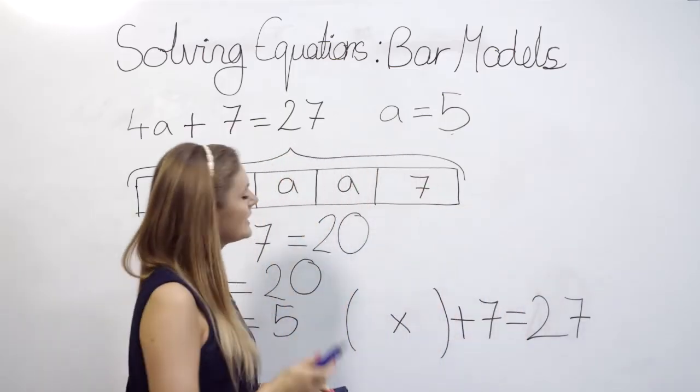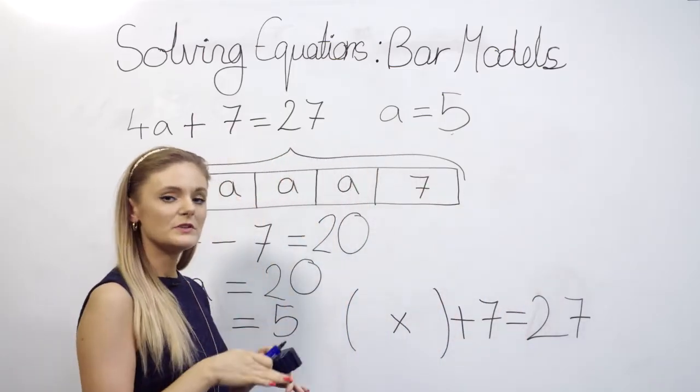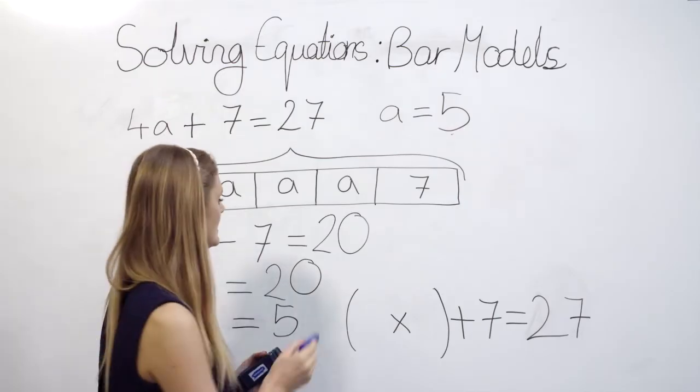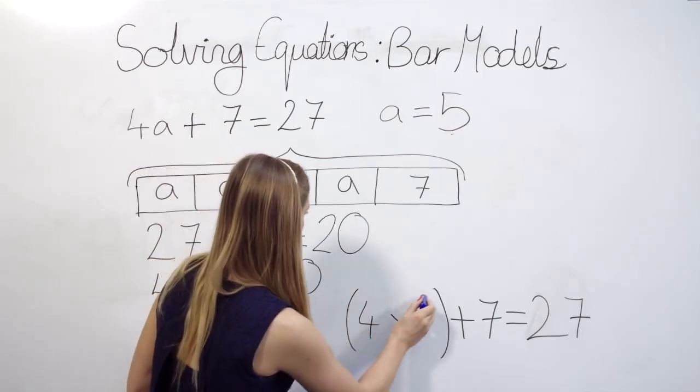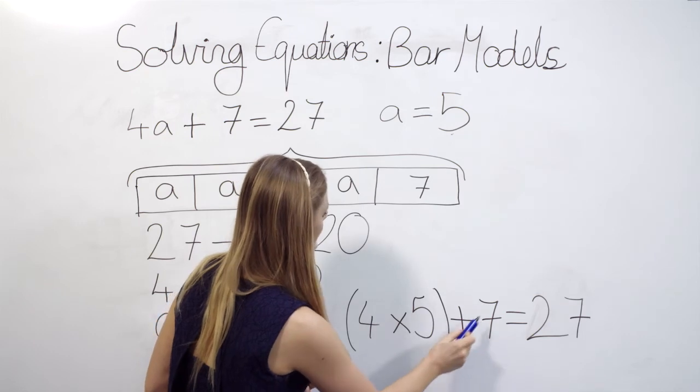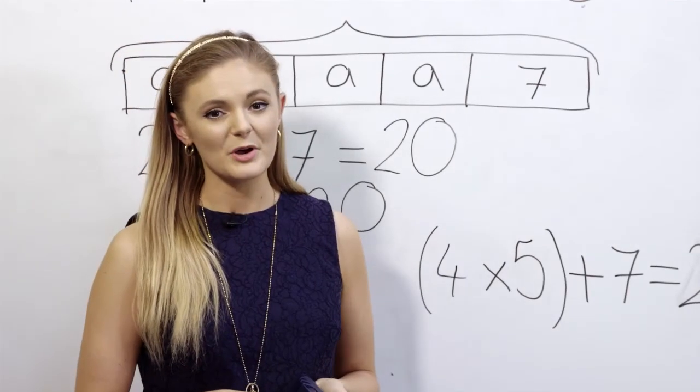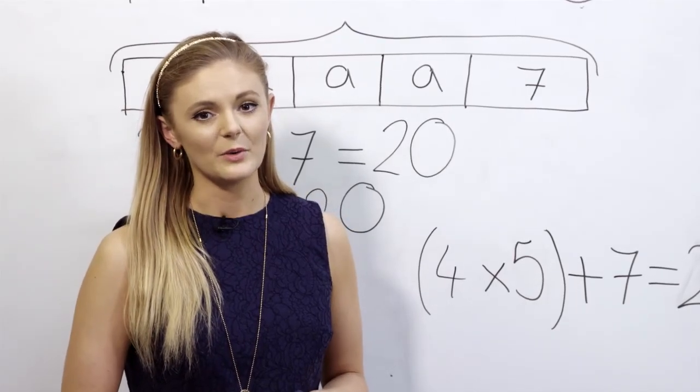And finally it's a really good idea to get students to just plug this new value back into the original equation just to check that it actually works. So I've got 4 times 5 plus 7 which we know equals 27. And that's how you can use bar modelling to solve algebraic equations.